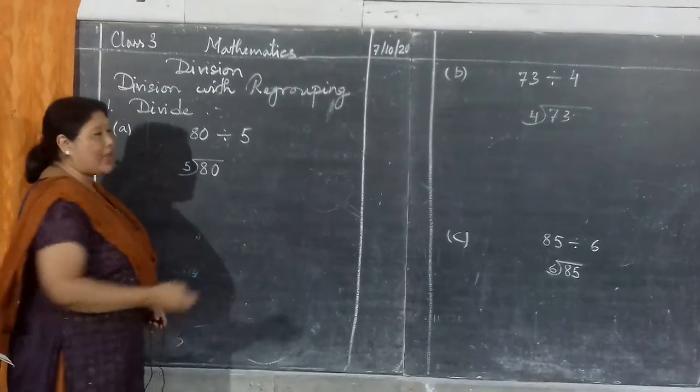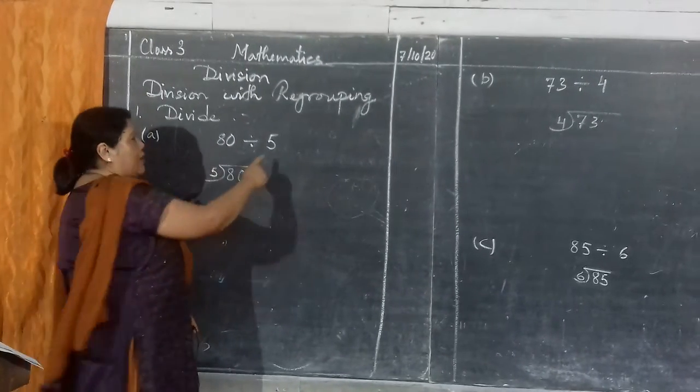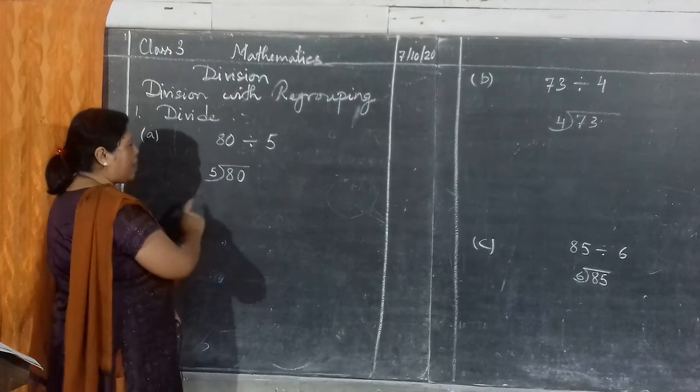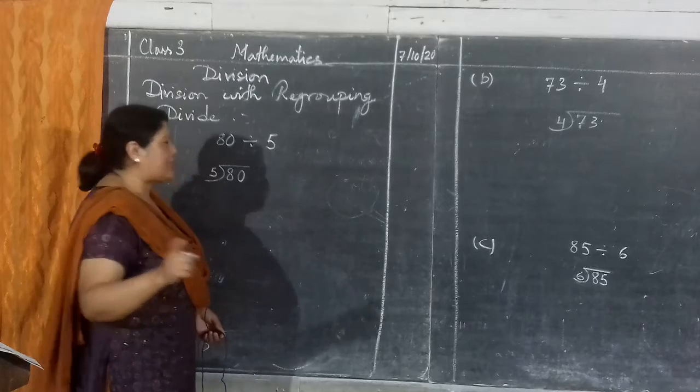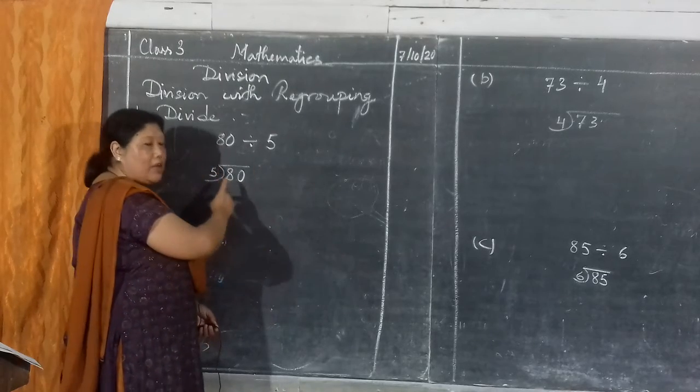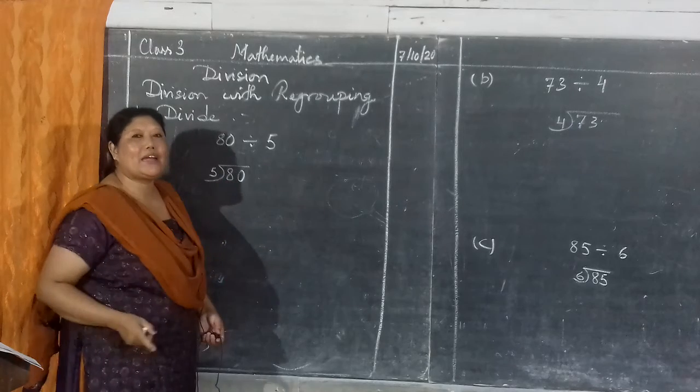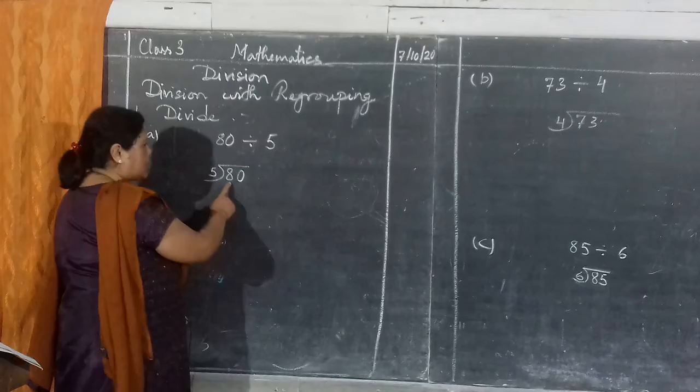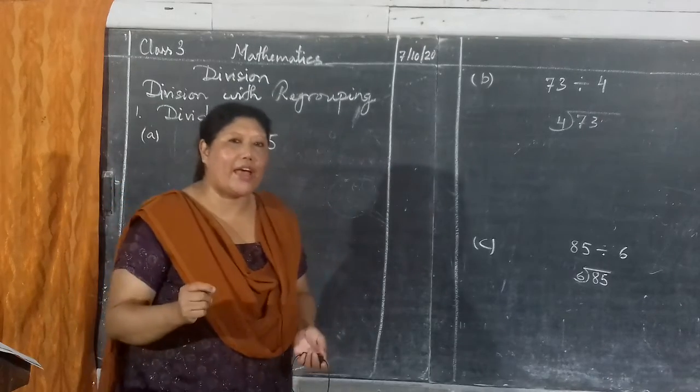So here, 80 is divided by 5. 80 is dividend, 5 is divisor, you know that. First, what I have taught you last time - first you have to divide. If it is a two digit number, you have to divide the number at the tens place.